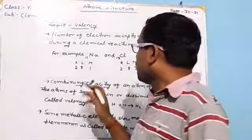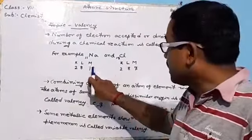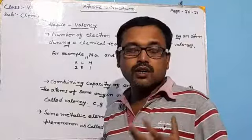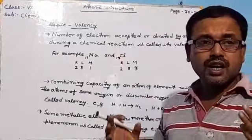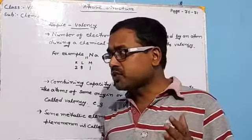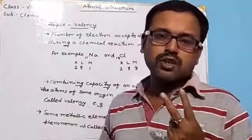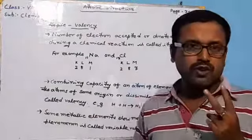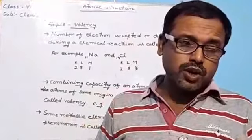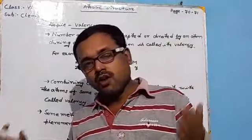In sodium, only one electron is present in the last shell. To attain stability it should have eight electrons in the last orbit according to the law of octet. An atom should have eight electrons in its last orbit to achieve stability. Exception: hydrogen and helium, because they have only one orbit and can accommodate a maximum of two electrons — completing the duplet gives them stability.